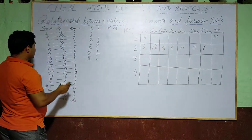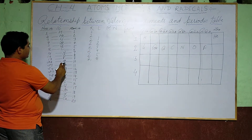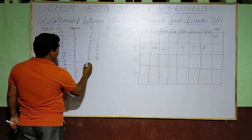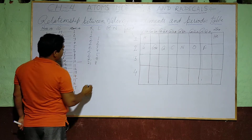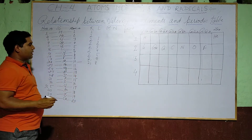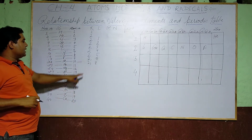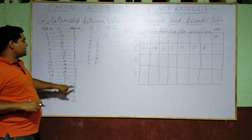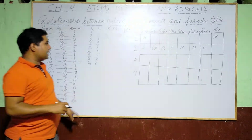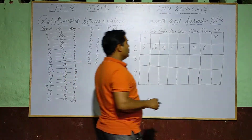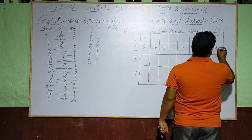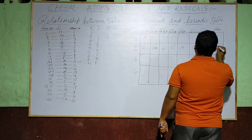Neon has configuration 2 and 8. It is a stable element, so it is placed in Period 2 in the zero-valency group — alongside Helium.